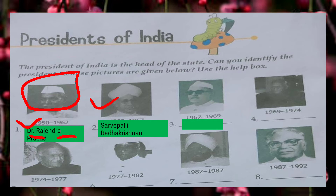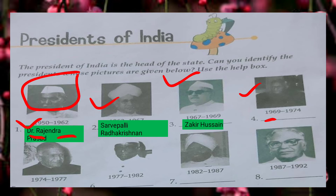In picture number 3, he is the third President of India and he was the President from 1967 to 1969. So who was he? Zakir Hussain. The next picture covers 1969 to 1974. You have to identify who he was. He was V.V. Giri.